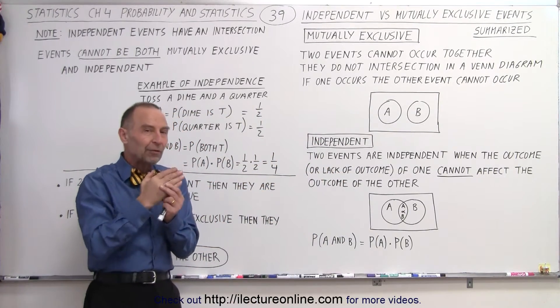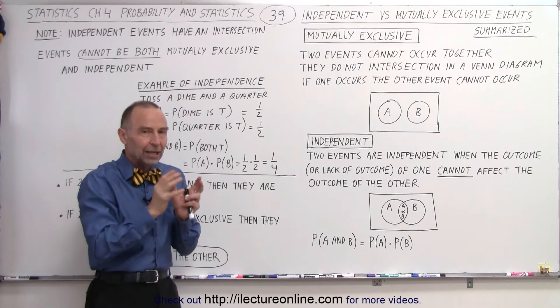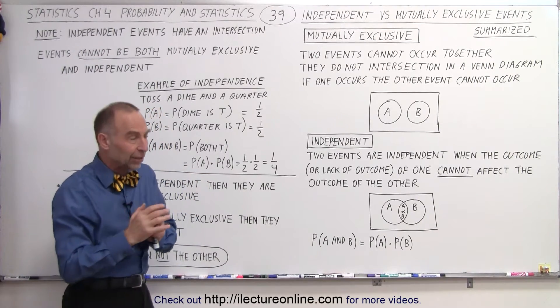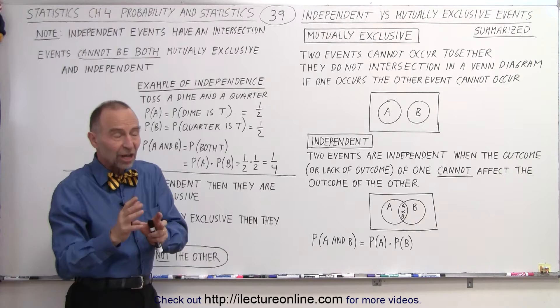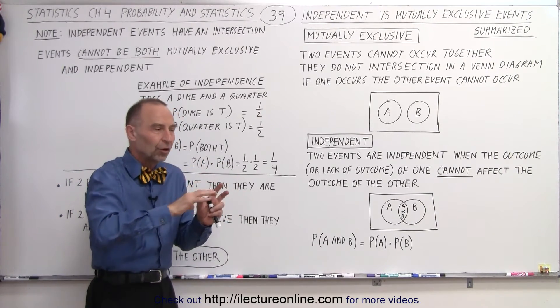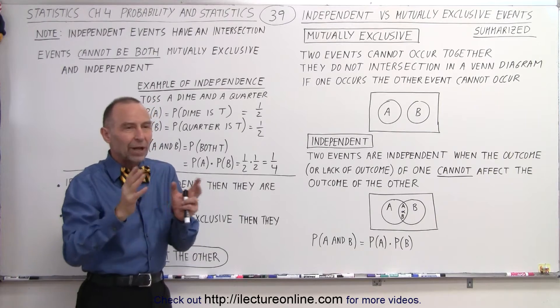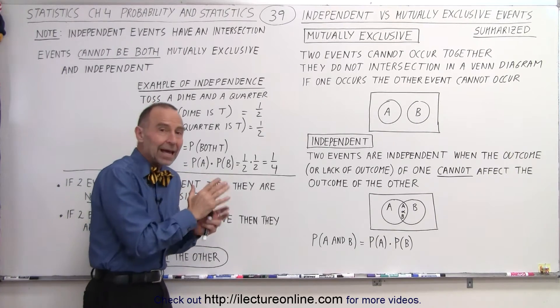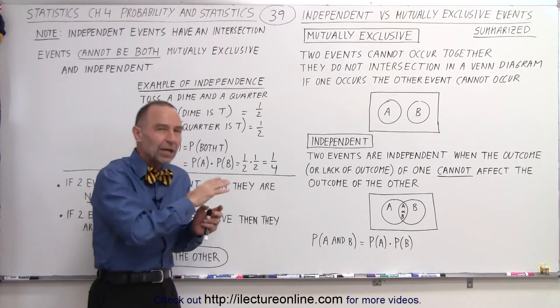So if the probability of A has a certain value and the probability of B has some value, that probability of B will not change if A has happened or not happened. In other words, the outcome of B has no relevance to the outcome of A, and the outcome of A has no relevance to the outcome of B.